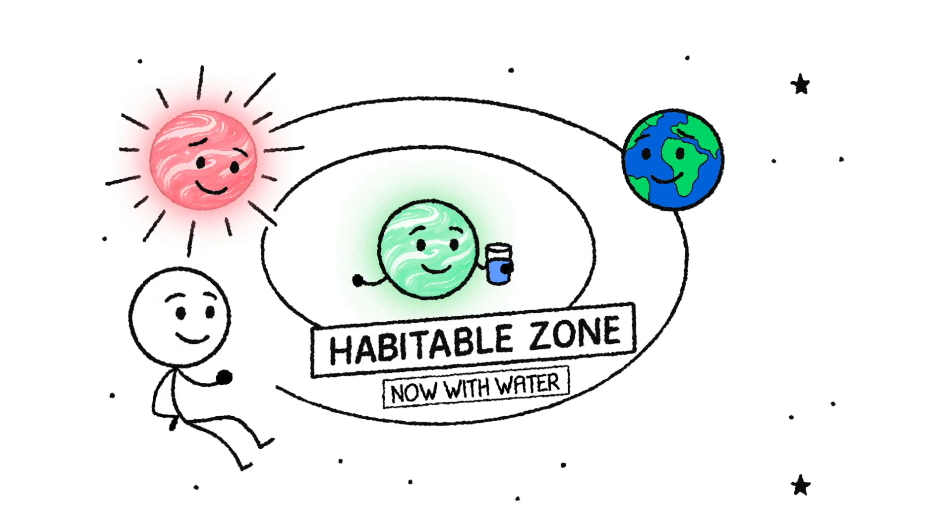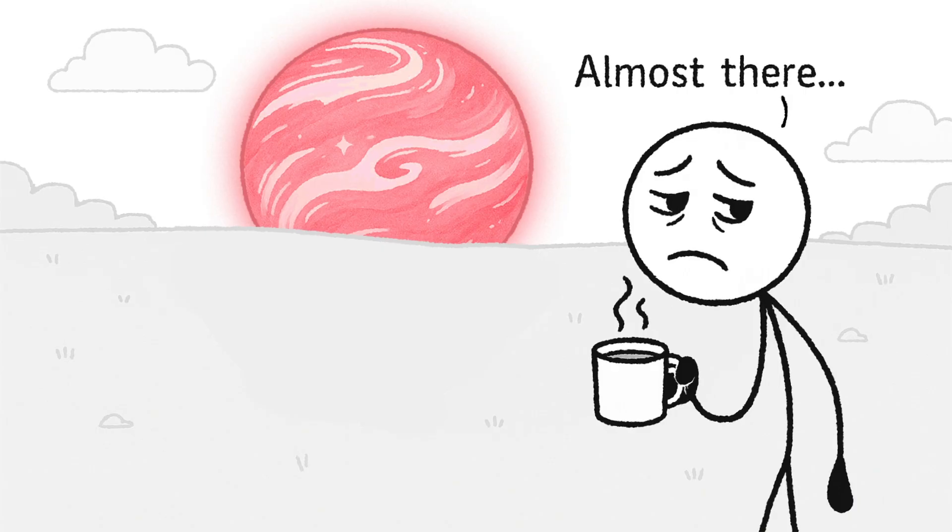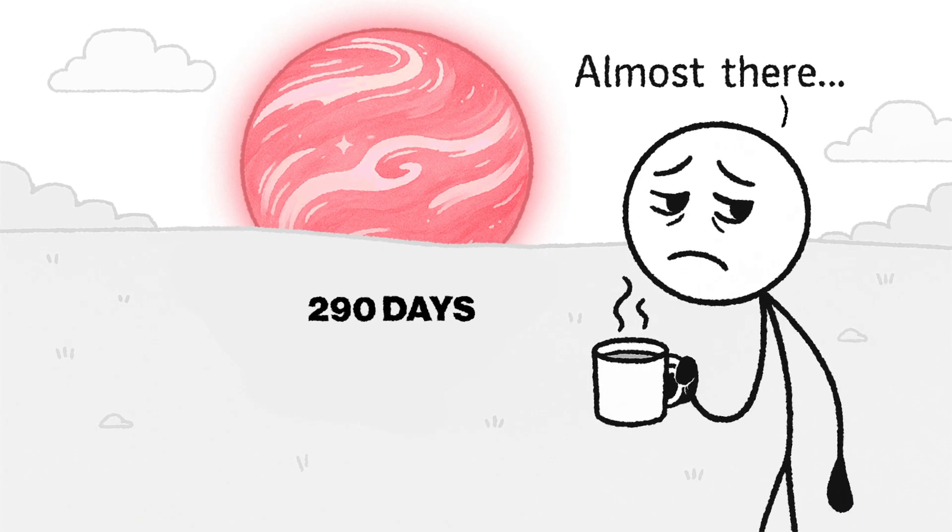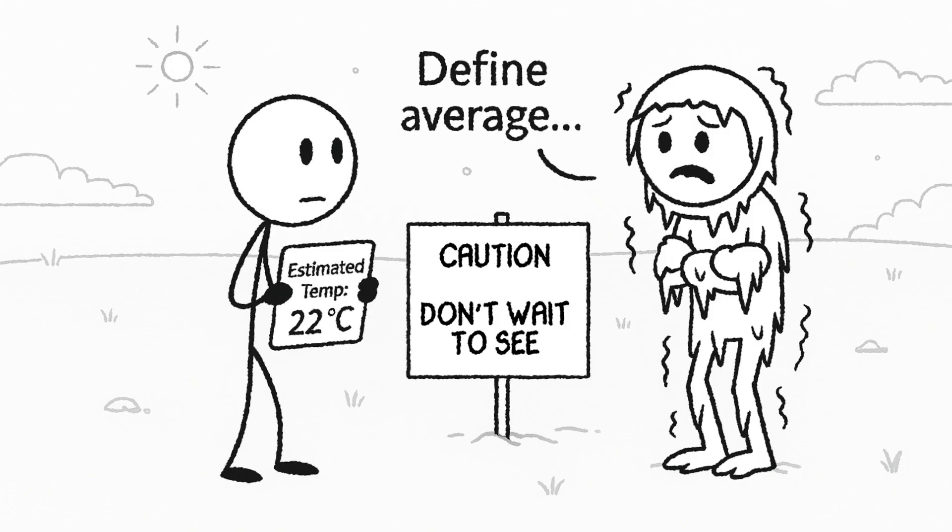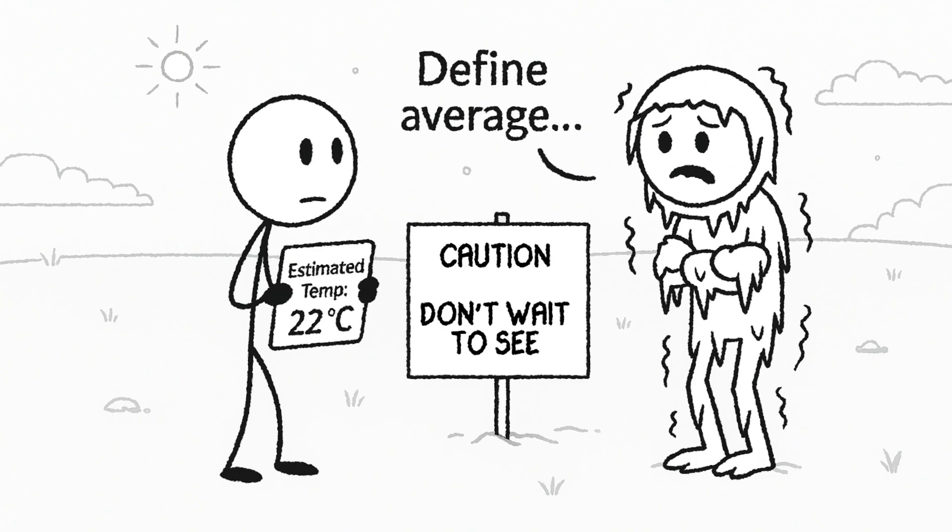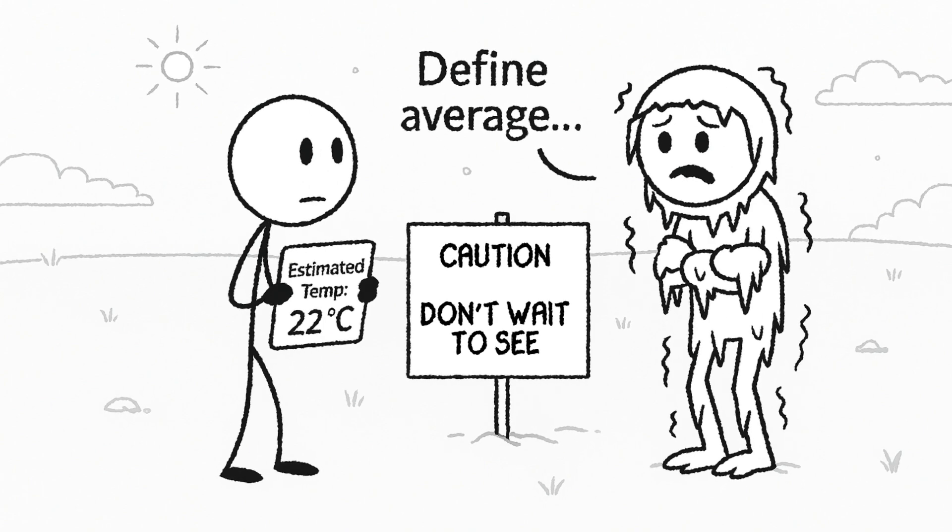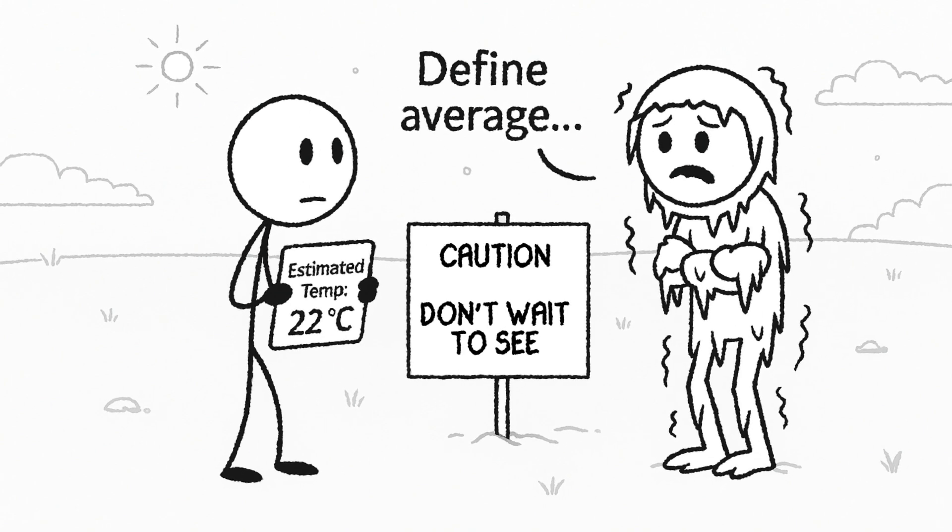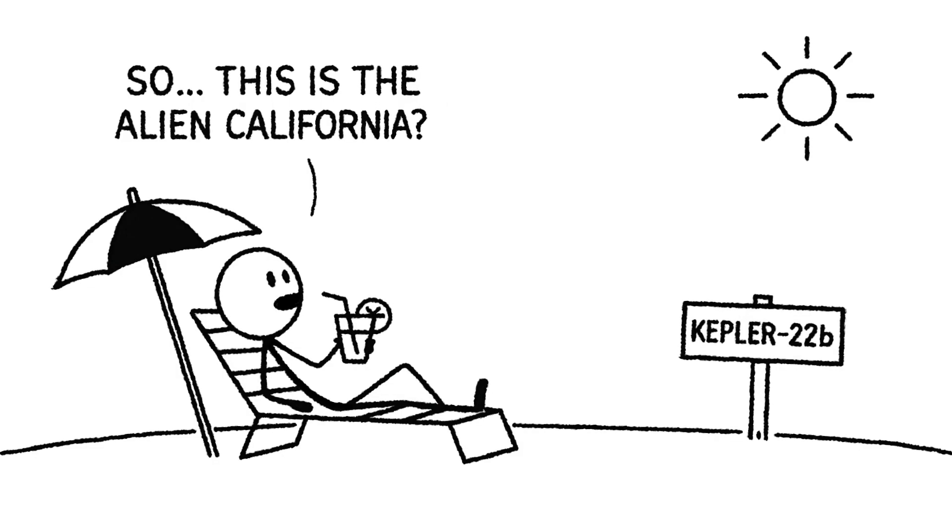This is called the habitable zone, the orbital Goldilocks zone, where temperatures might allow for liquid water. It takes about 290 Earth days to complete a full orbit. Based on its distance and the star's energy output, the planet's temperature is estimated at 22 degrees Celsius, 72 degrees Fahrenheit. That's the kind of weather you'd expect on a warm, clear afternoon in California. Sounds ideal.